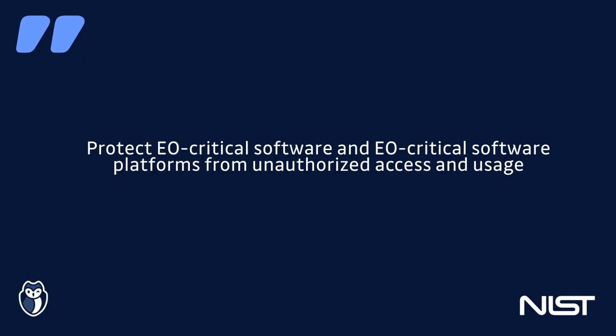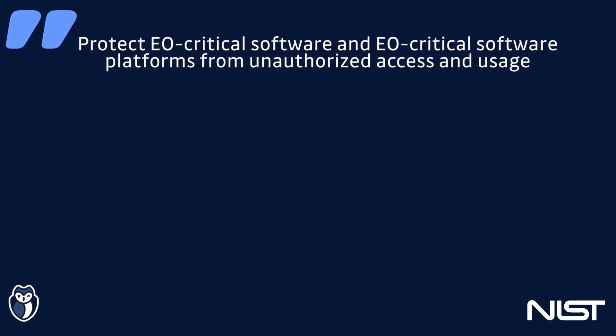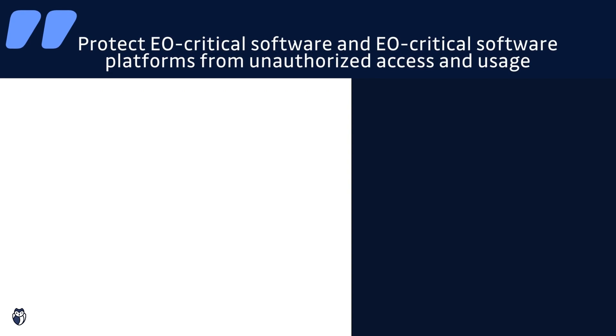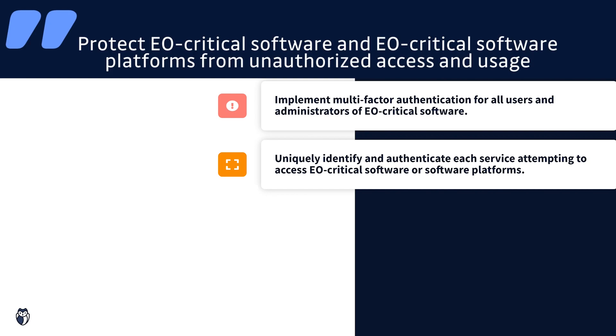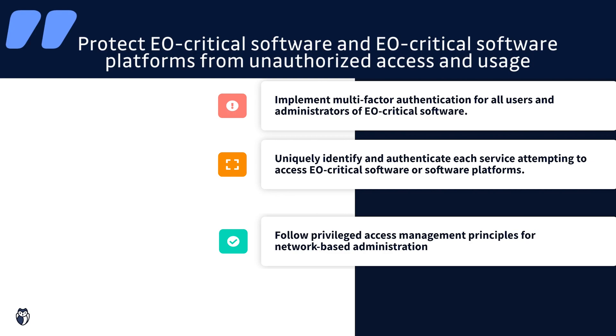NIST goes on to explain in great detail the security measures needed to protect this software. Let's break these down. The first measure is to protect EO-critical software and EO-critical software platforms from unauthorized access and usage. The suggestions NIST makes include implementing multi-factor authentication for all users and administrators, uniquely identifying and authenticating each service attempting to access the EO-critical software or platforms, and following privileged access management principles for network-based administration — including hardening platforms used for administration, logging all admin sessions, and requiring unique IDs for each administrator.